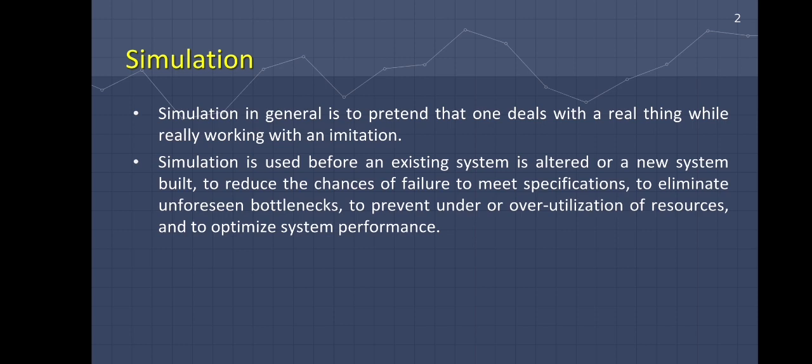Based on this example, we can say that simulation is used before an existing system is altered or a new system is built — to reduce the chances of failure, to meet specifications, to imitate unforeseen bottlenecks, to prevent under or over utilization of resources, and to optimize system performance.